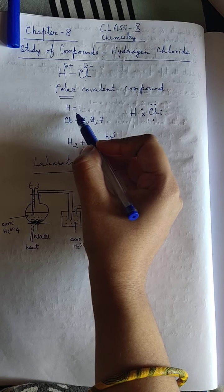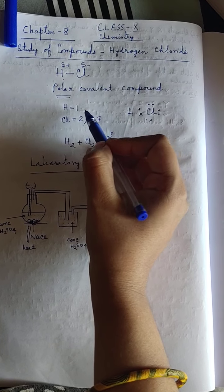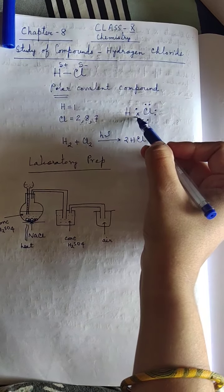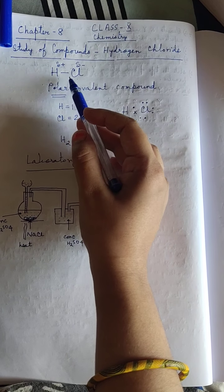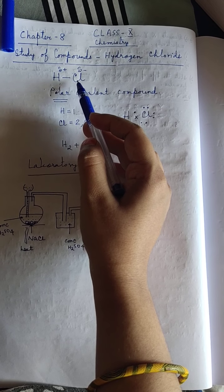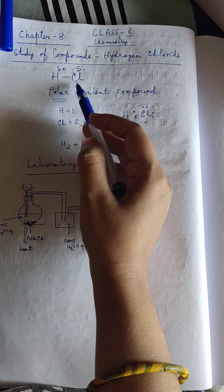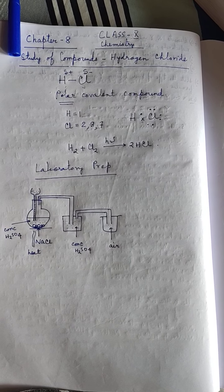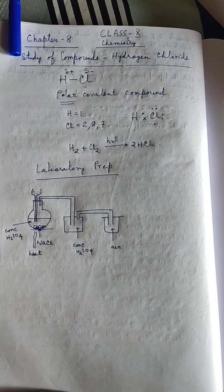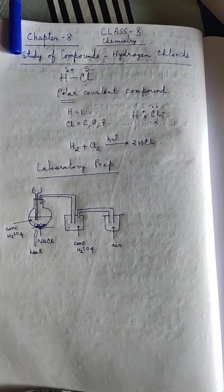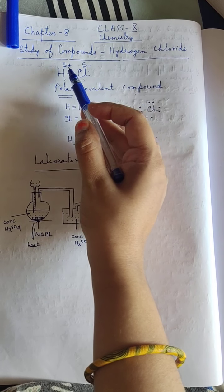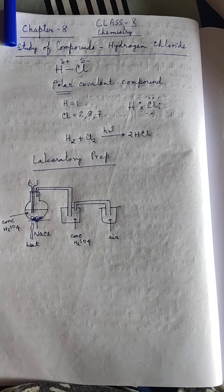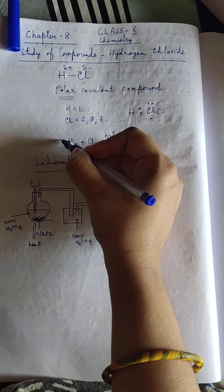The electronic configuration of hydrogen is 1 and chlorine is 2,8,7, so both atoms need one electron each to attain the octet. Hence they share one electron each to undergo a covalent bond. The term 'polar' arises because the electronegativity of chlorine is higher than that of hydrogen. Electronegativity is the tendency to attract the shared pair of electrons towards itself. So chlorine attracts the shared pair towards itself, giving rise to a partial negative charge on chlorine and partial positive charge on hydrogen, generating polarity in the compound.